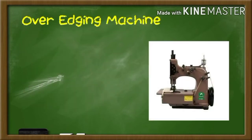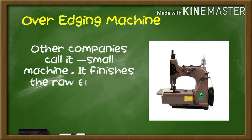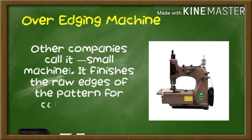The next one is the over edging machine. Other companies call it a serger machine. It finishes the raw edges of fabric for garment construction.